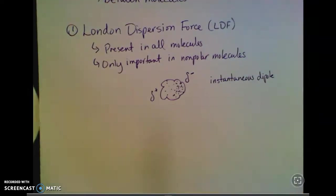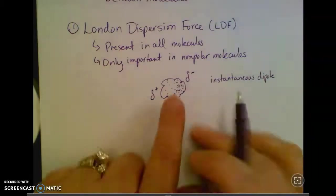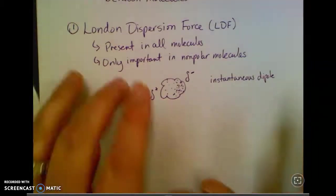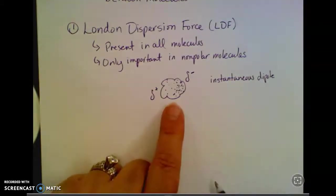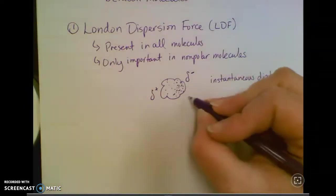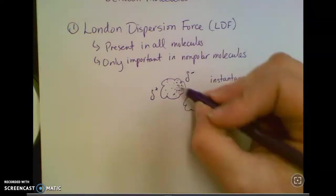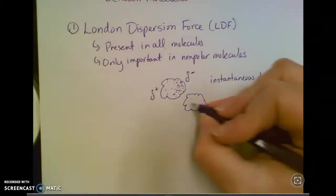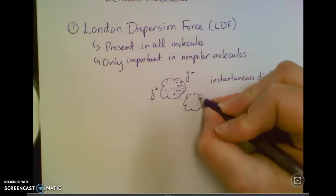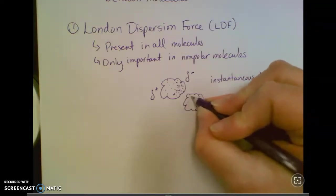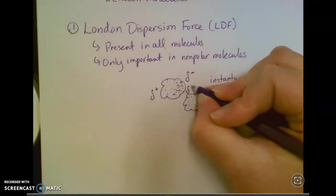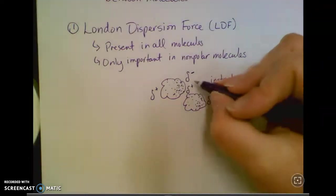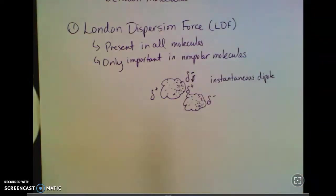Once they get together, they repel each other and spread back out. But just for an instant, you've got that instantaneous dipole that causes some attraction with anything next to it. This negative charge here is going to repel its electrons. So this molecule gets a little bit negative over here and a little bit positive on this side. There's just a momentary attraction between the negative and positive.